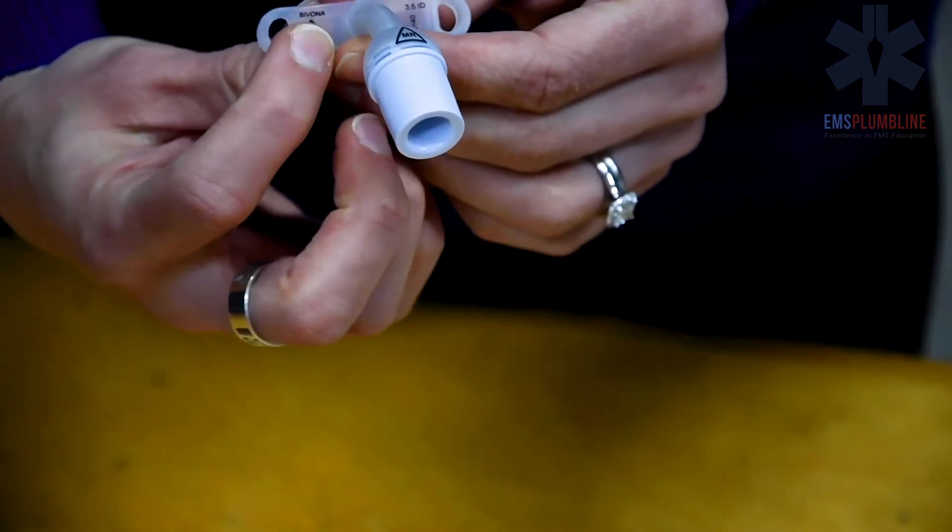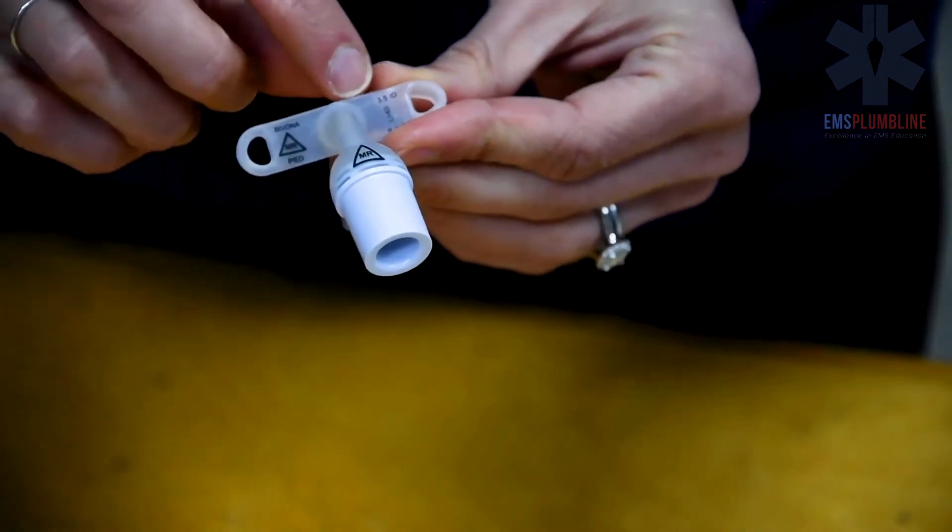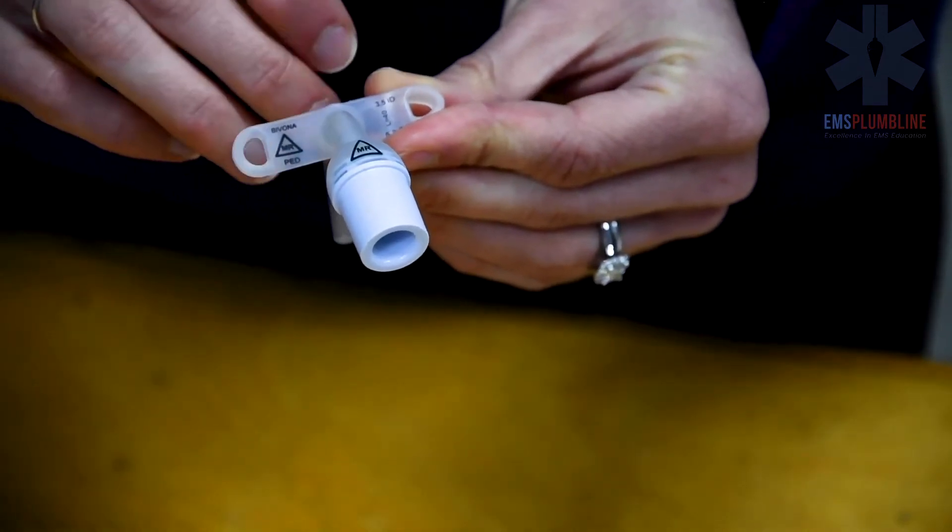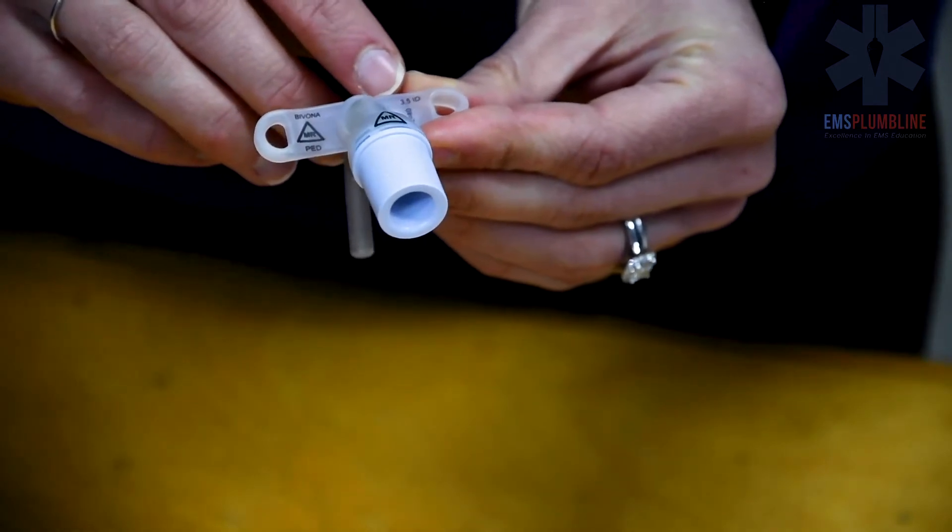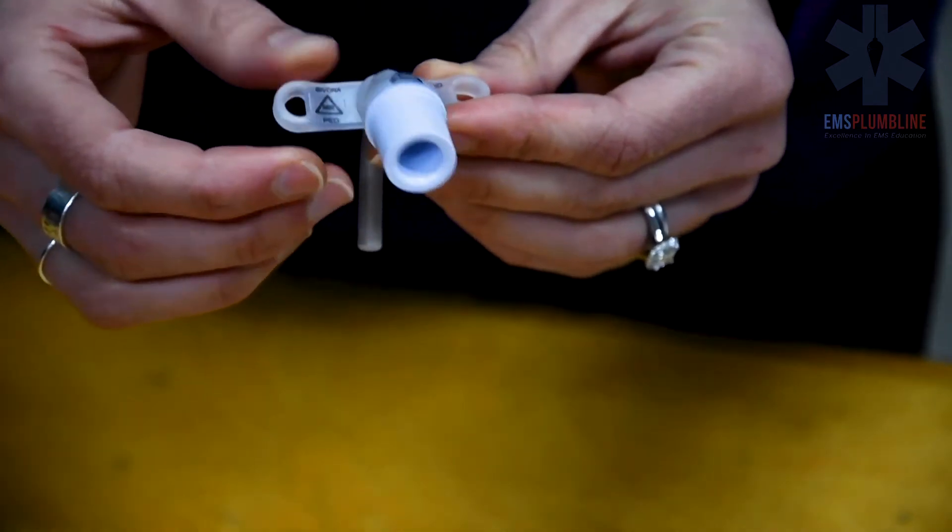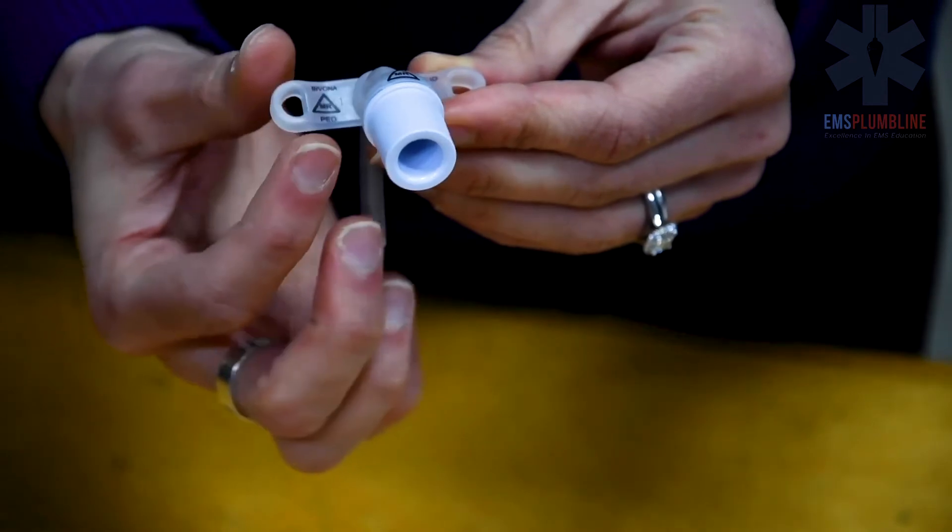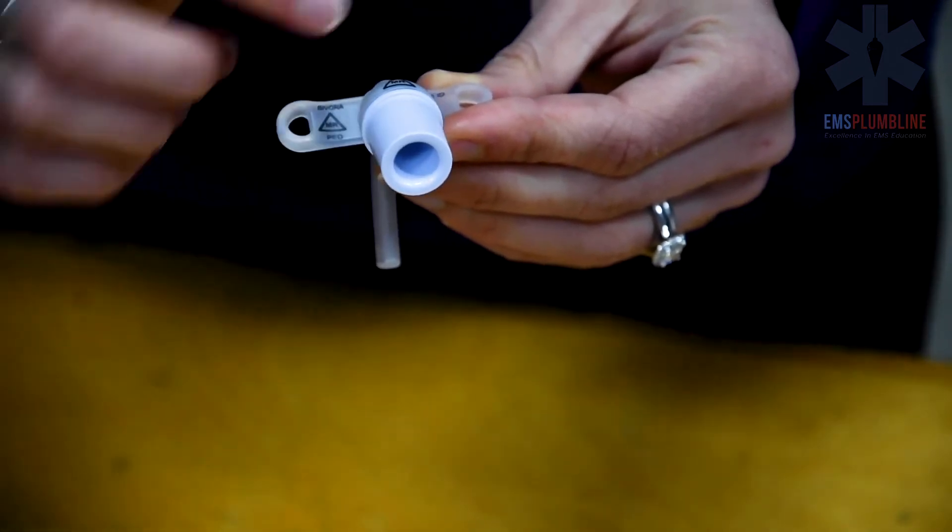When looking at a tracheostomy tube, information can be found on the flanges or the neck of the trach tube. In children, Neo or PED will indicate the size, as well as a number indicating the inner diameter of the tube.